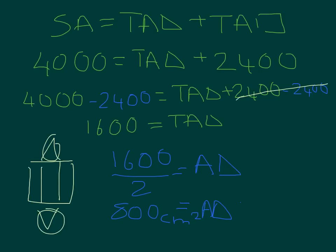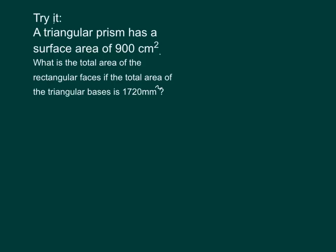I hope you got that — make sure you've understood it because the next one you're going to do on your own. A triangular prism has a surface area of 900 centimeters squared. What is the total area of the rectangular faces if the total area of the triangular faces is 1,720 millimeters? Remember to convert units first — 1 centimeter equals 10 millimeters. Convert your units, then follow the same steps, plug in the correct information, and solve. Bring this one to class with all your other notes. Good luck.